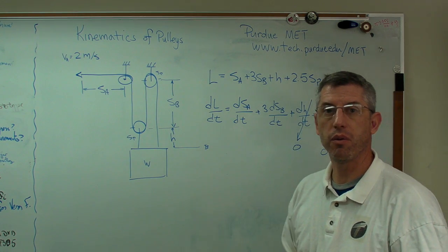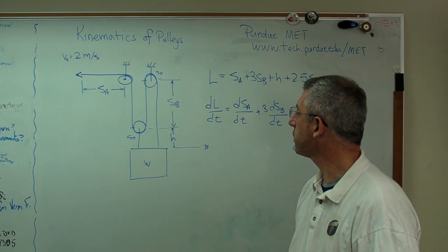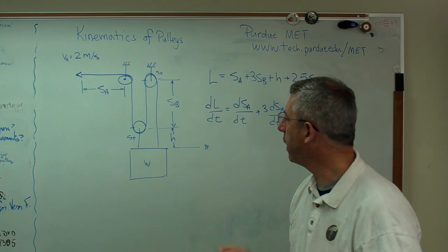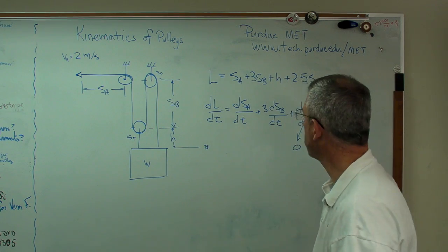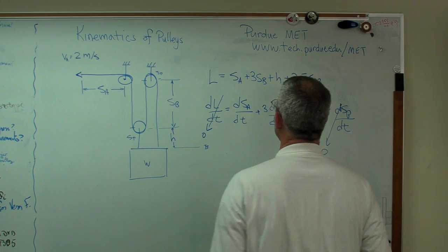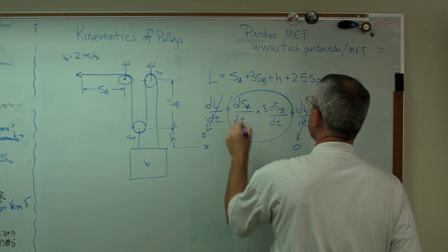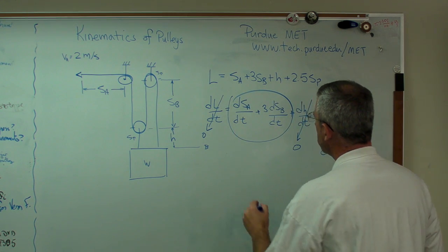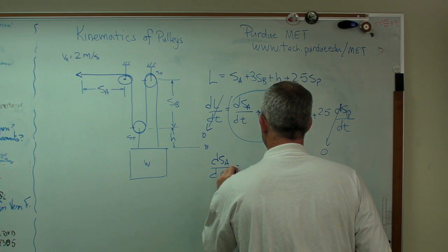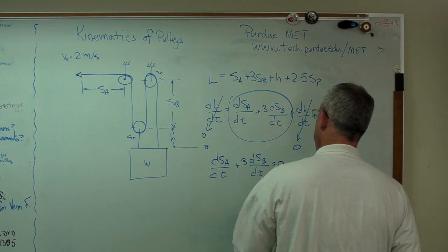And the rope itself. We're assuming implicitly here that the rope doesn't change length. The length is the same. Now I know ropes stretch a little bit. But for our purposes here, we're assuming that the length stays the same. So that goes to 0. That's a lot easier here. That just means that's all we've got left. And that's 0. So what we've really got is dSA/dt plus 3 dSB/dt equals 0.